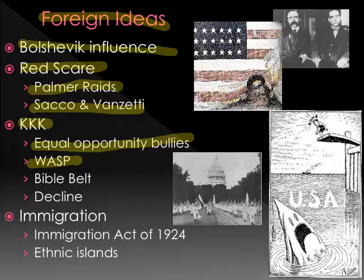Anglo-Saxon — the A-S in WASP — means that you can trace your heritage to Northern European races: the Angles and the Saxons, Northern European, Scandinavian, Germanic, English. If you can trace your heritage to those races, then in the Klansman's view you are a true American because those were the settlers of America. The Klan chooses to ignore the fact that Native Americans were already here — again, twisted and warped thinking.